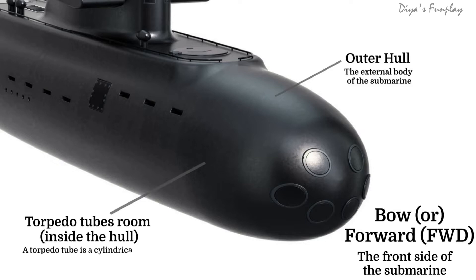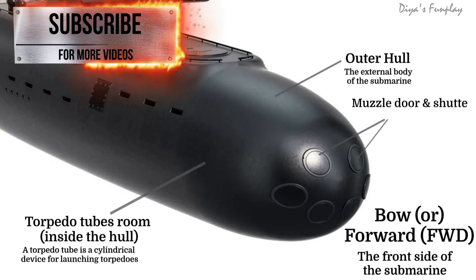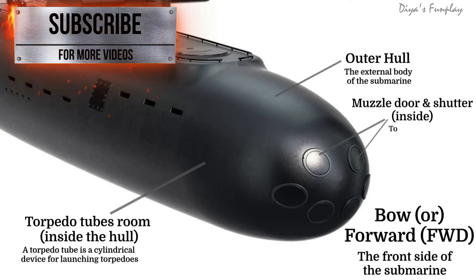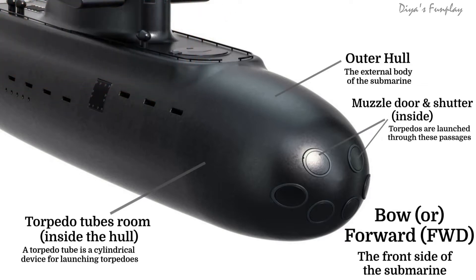Torpedo tubes room. A torpedo tube is a cylindrical device for launching torpedoes. Muzzle door and shutter — torpedoes are launched through these passages.